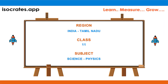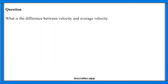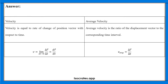Welcome to isocrats.app channel, a platform where you learn, measure, and grow. In this video, we will show a quick and simple way to solve the question: what is the difference between velocity and average velocity? Velocity is equal to the rate of change of position vector with respect to time, while average velocity is the ratio of displacement vector to the corresponding time interval.